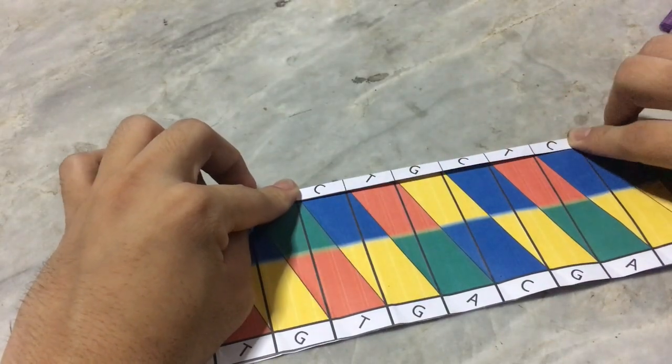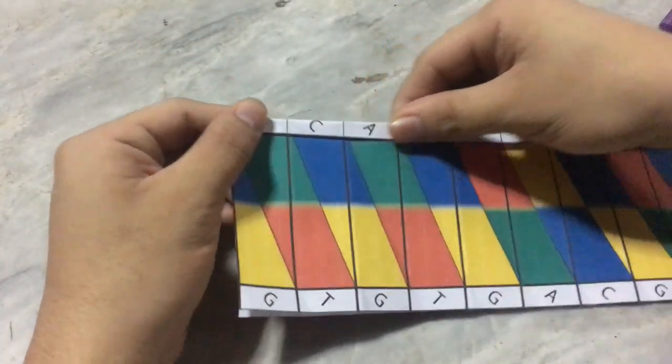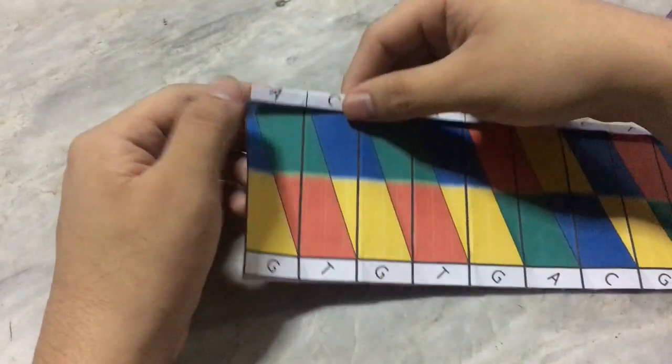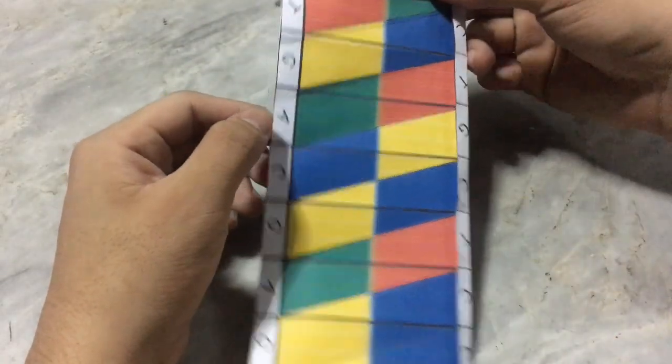Just remember, if the letter is C, the pair letter is G, and if the letter is A, the pair letter is T, and vice versa.